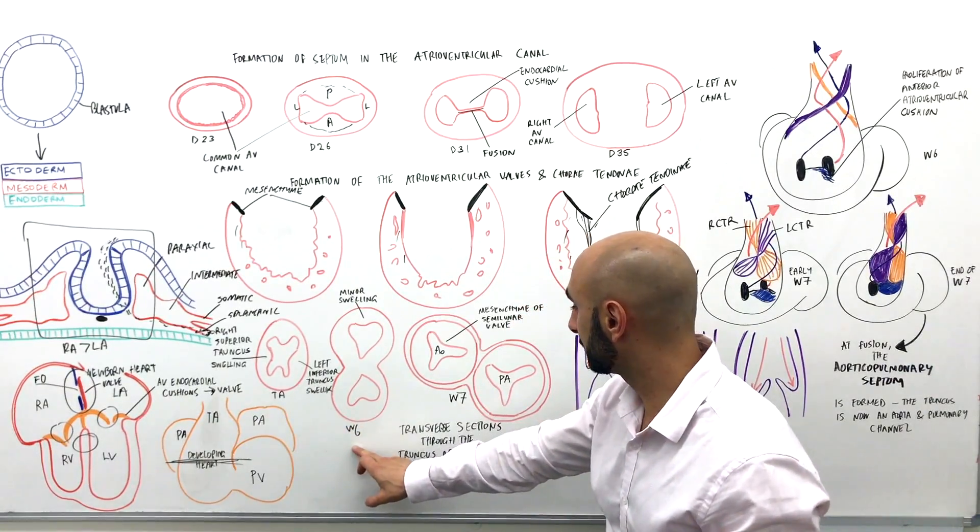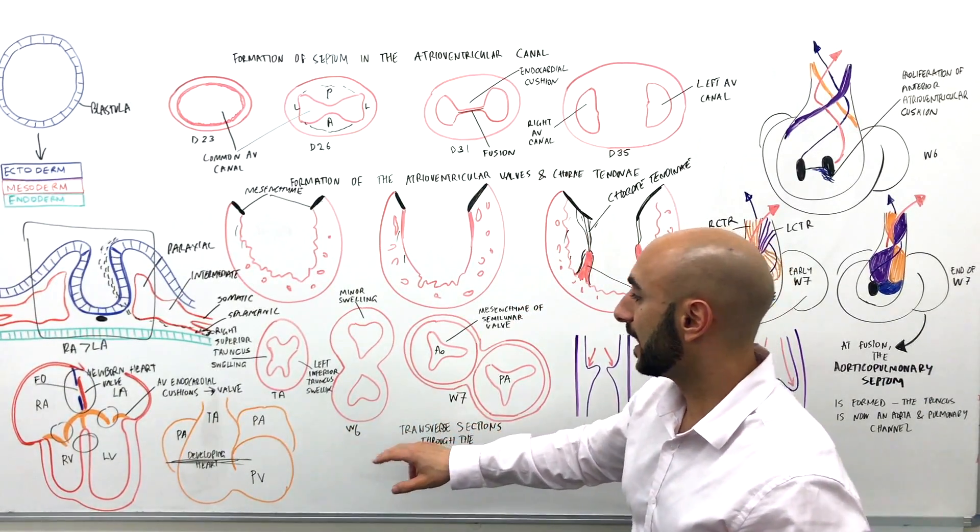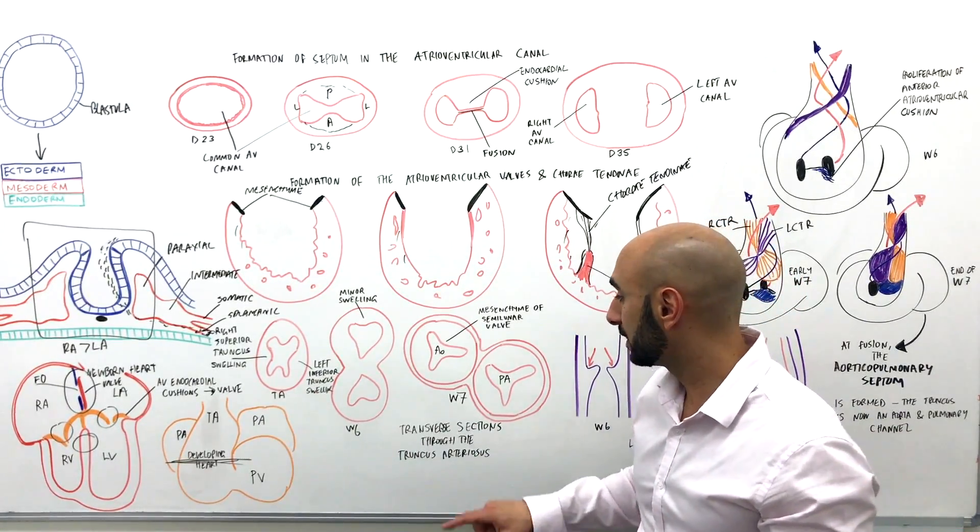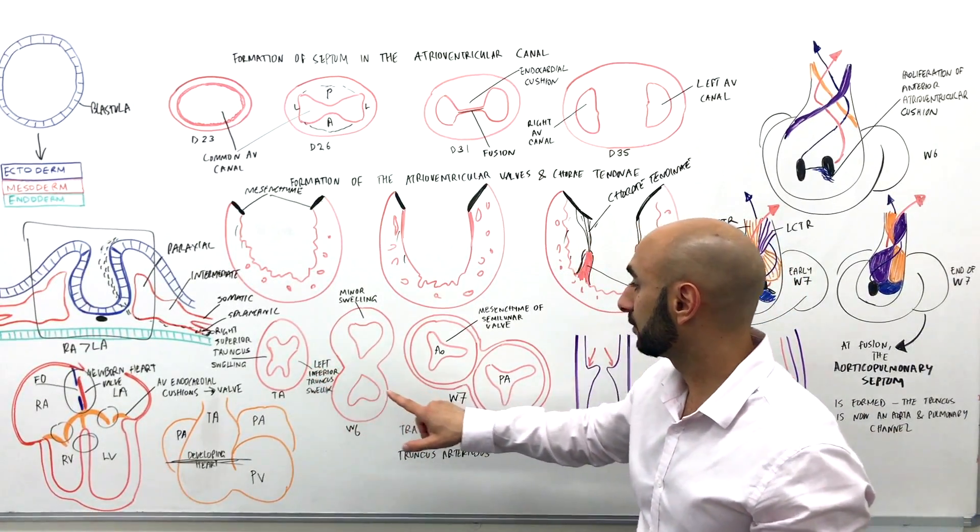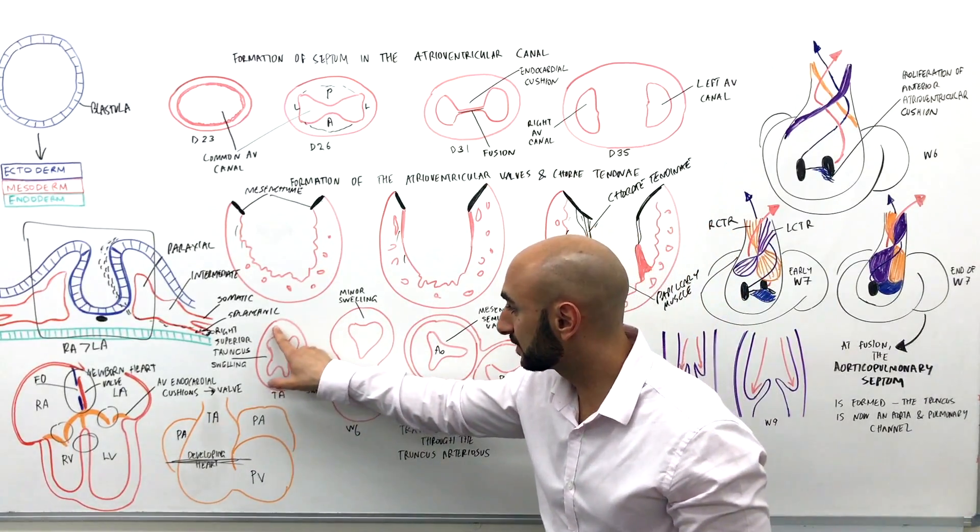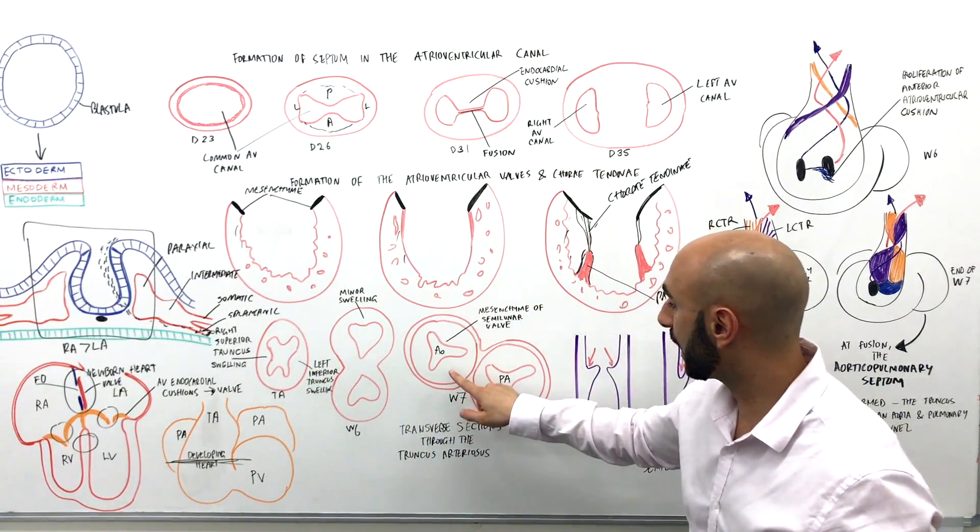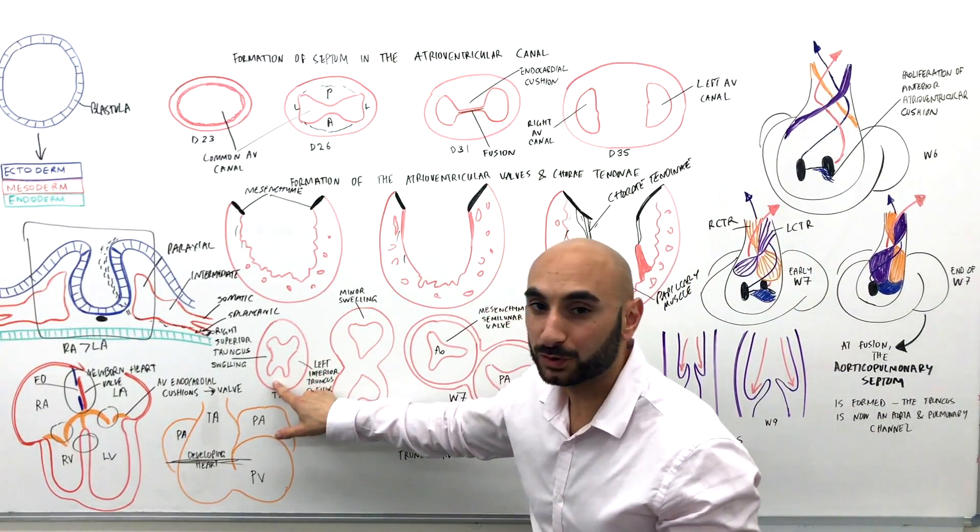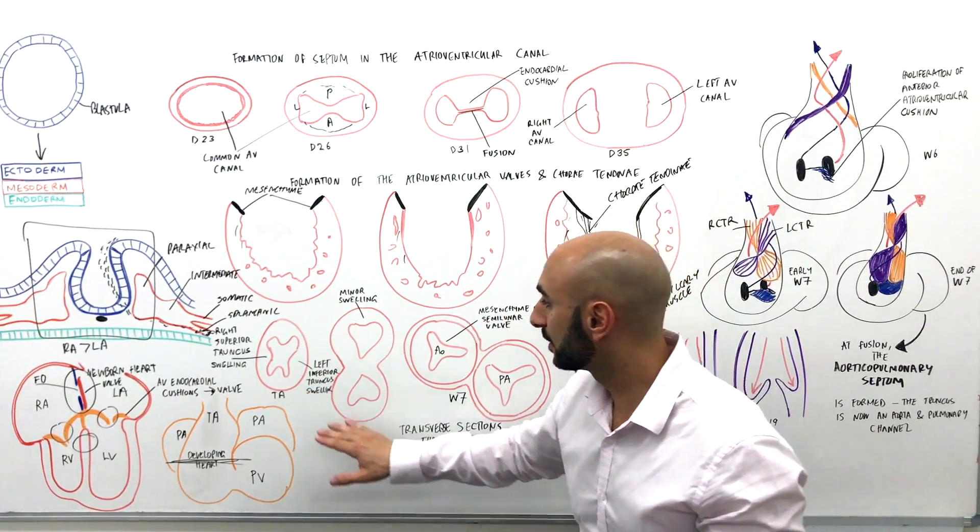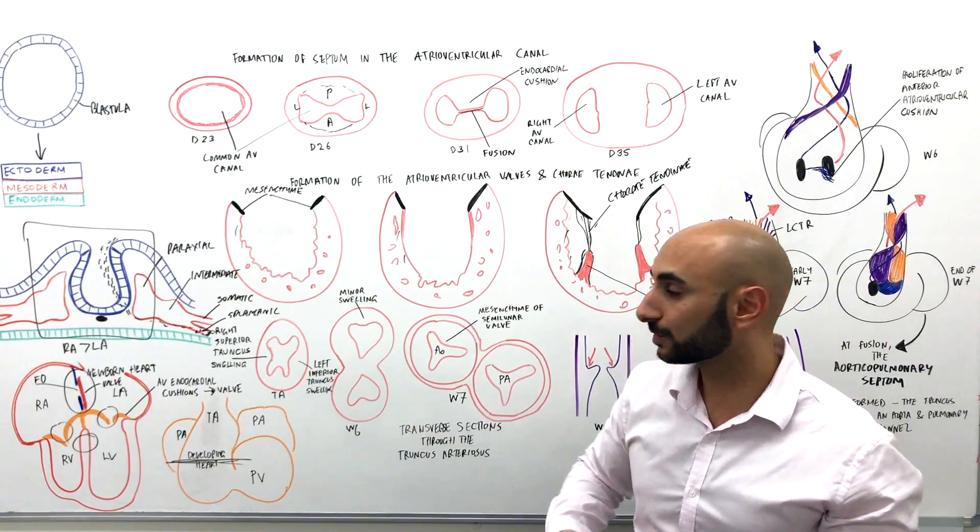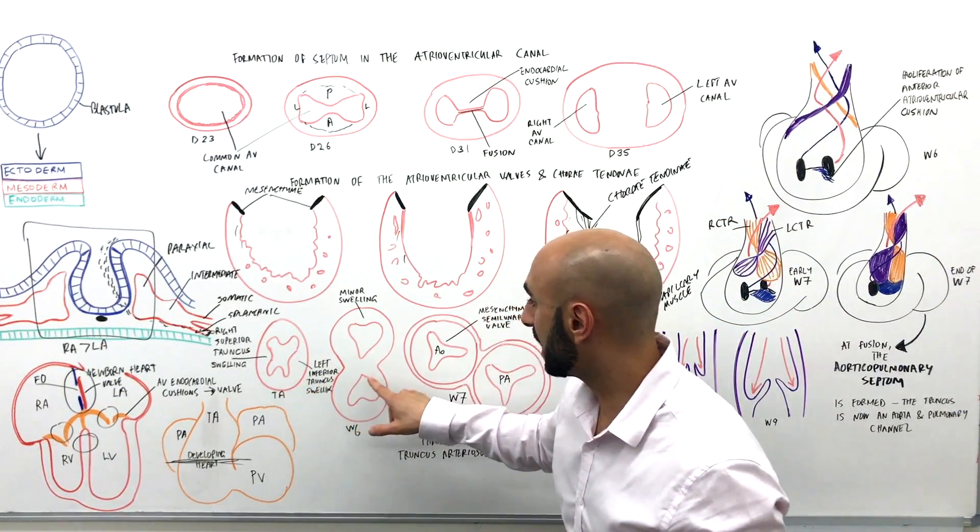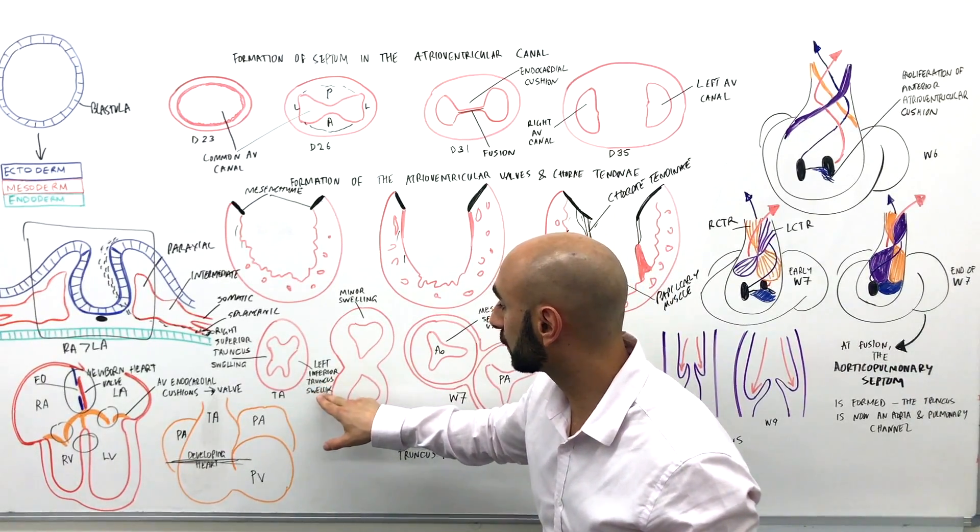Okay, now paying attention to these three diagrams here, again this is in week five, week six, week seven, and this is at the level of the semilunar valves. Now we have this single lumen becoming both the aorta and the pulmonary artery, and at this level is called the truncus arteriosus.